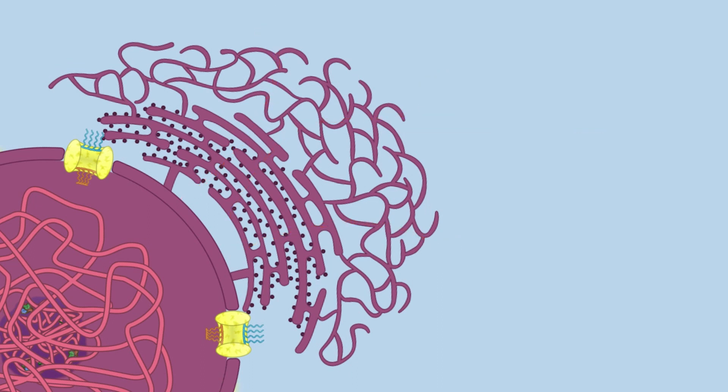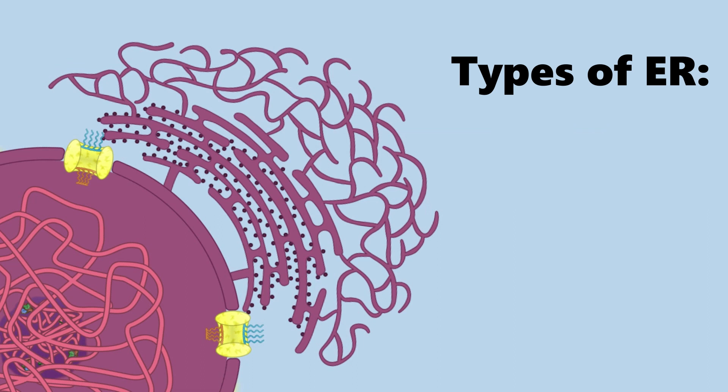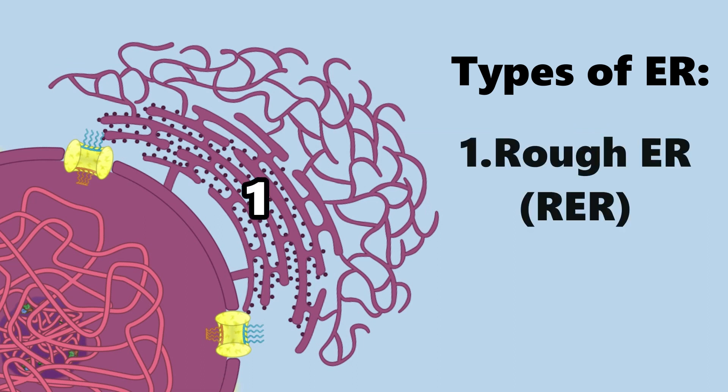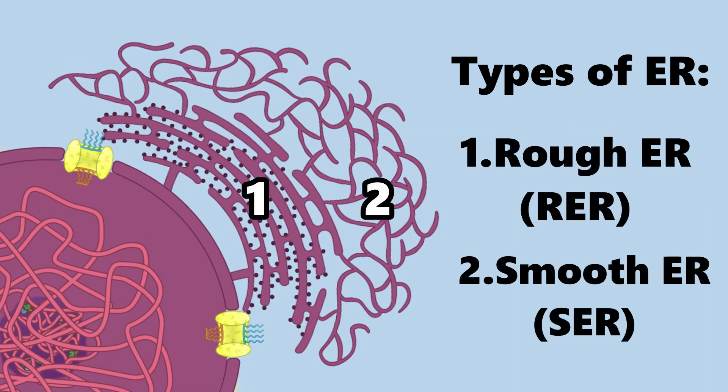There are two primary types of endoplasmic reticulum: one, the rough ER, and two, the smooth ER.